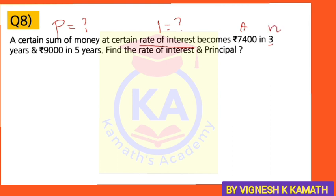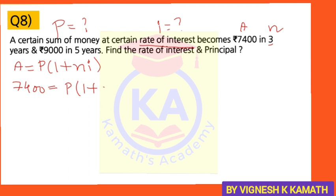We form equation 1 using A = P × (1 + NI): 7,400 = P × (1 + 3I). Take this as equation number 1. Now for the second part, in 5 years the sum becomes Rs. 9,000 — so A₂ = 9,000 and N₂ = 5. Again, P and I are unknown. Using the same formula: 9,000 = P × (1 + 5I). Take this as equation number 2.